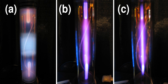Electric discharge in gases occurs when electric current flows through a gaseous medium due to ionization of the gas. Depending on several factors, the discharge may radiate visible light. The properties of electric discharges in gases are studied in connection with design of lighting sources and in the design of high-voltage electrical equipment.